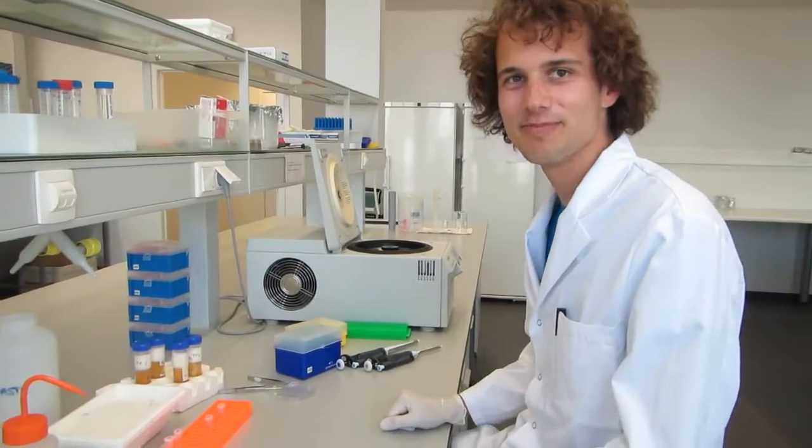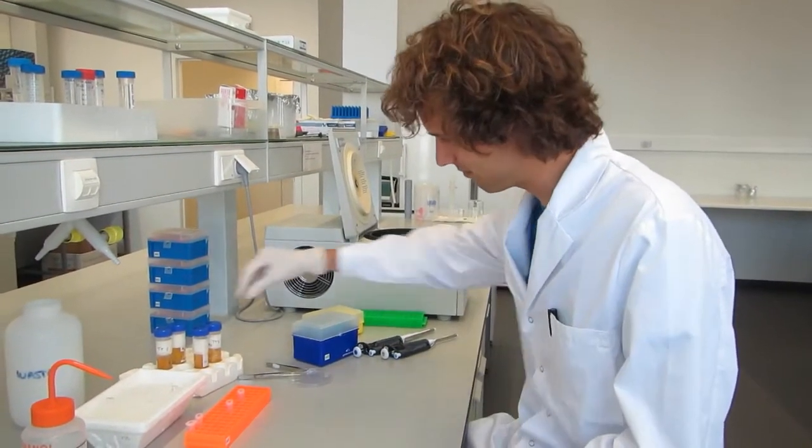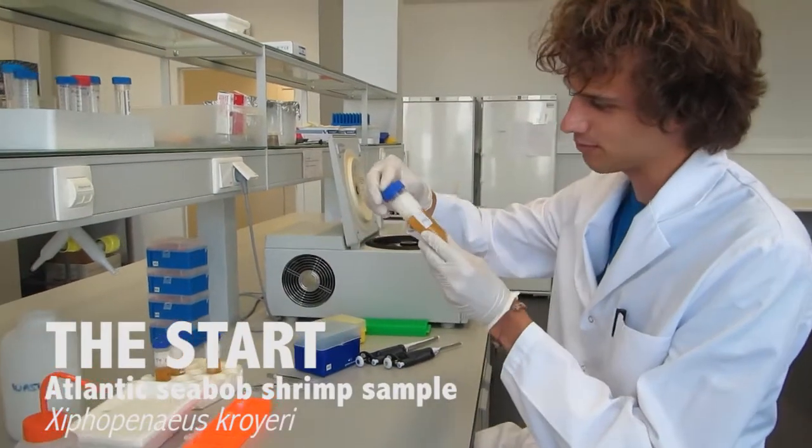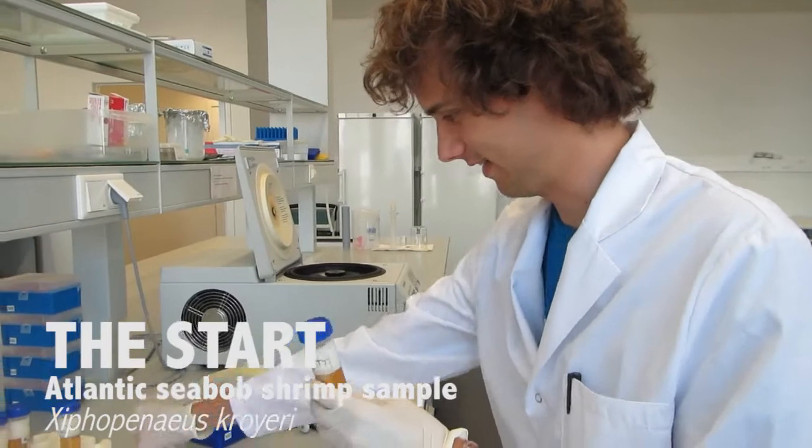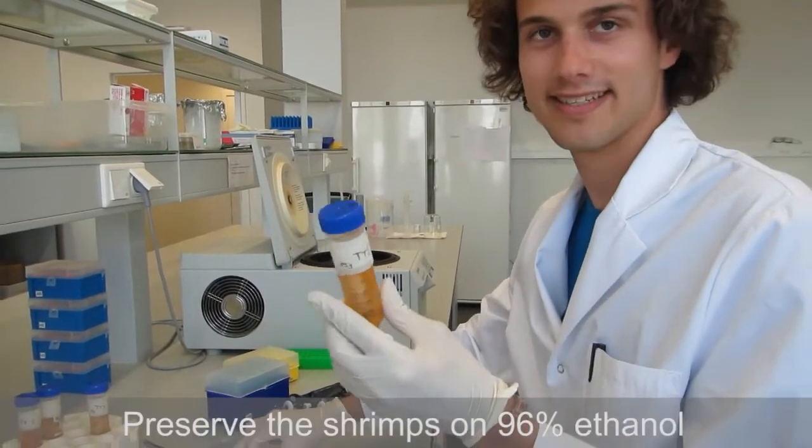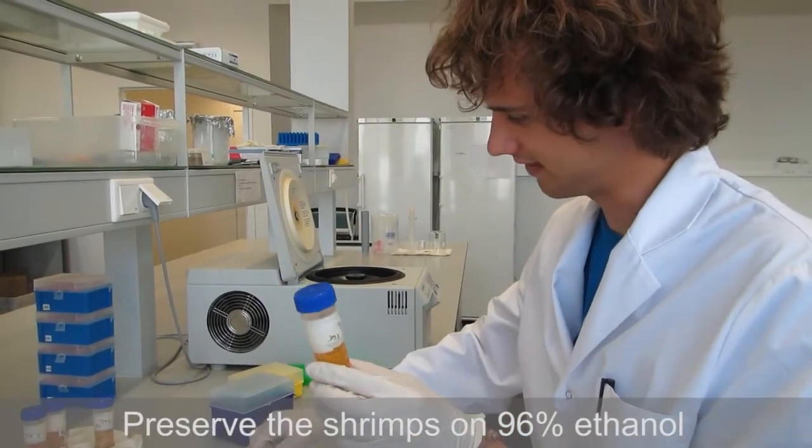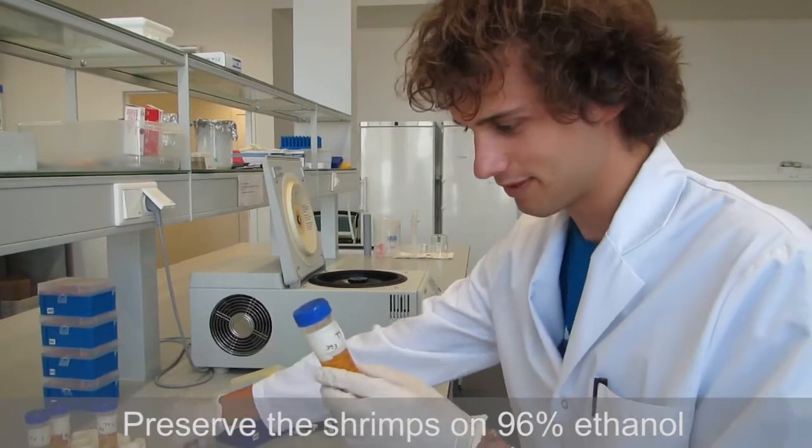Today we will extract some DNA from the seabob shrimp. Here we have some seabob shrimp in ethanol. It's 96% ethanol, so that's good for preserving the DNA of the shrimp.